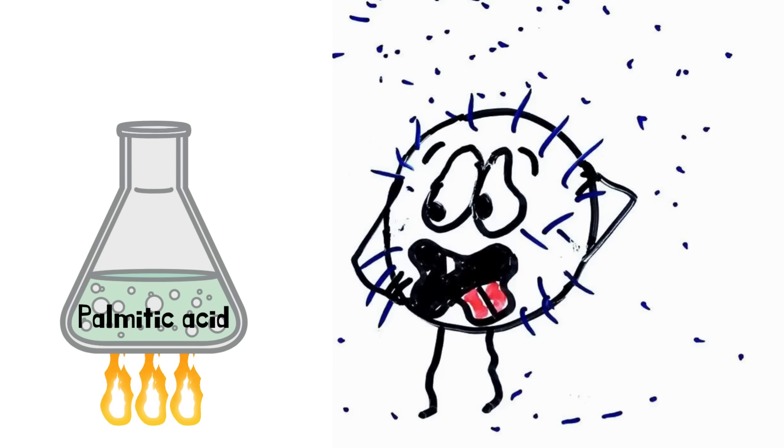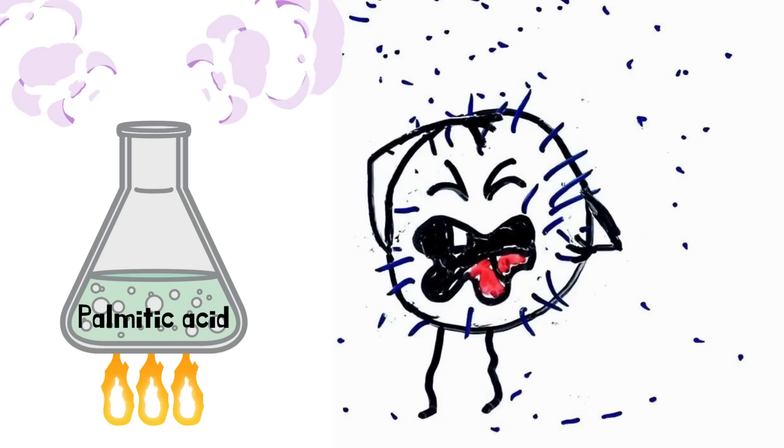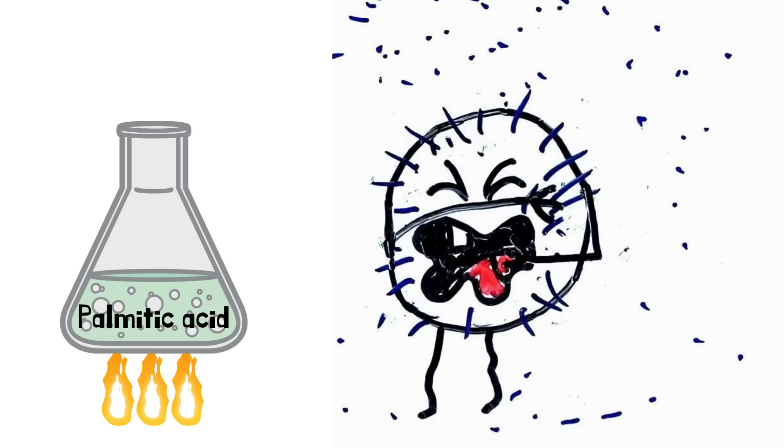For example, palmitic acid, when heated, emits acrid smoke and irritating fumes. This means that those fumes have a high biological activity and can damage living cells.